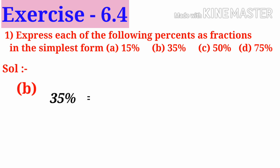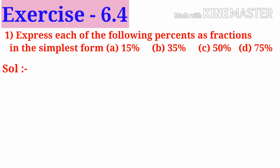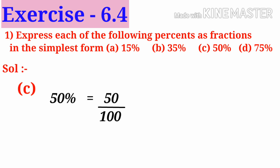B: 35 percent, that is 35 by 100. On simplification by 5, we get 7 by 20, which is the simplest form. C: 50 percent can be written as 50 by 100. On simplification by 50, we get 1 by 2, which is the simplest form.